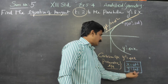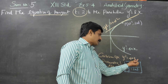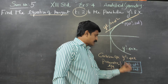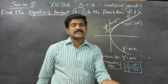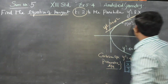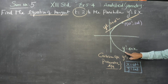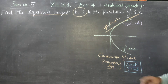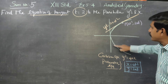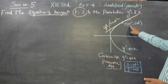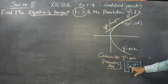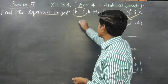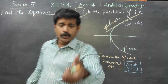If you substitute y equal to 2at and x equal to at square into y square equal to 4ax, both sides match — the parametric form satisfies the Cartesian equation. So any point on the parabola is of the form (at square, 2at). In parametric form, t is equal to 2.